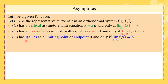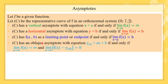C will have a point I with coordinates (a, b) as a limiting point or an end point if and only if the limit of f(x) as x tends to a is b. Finally, C will have an oblique asymptote whose equation is y equals ax plus b if and only if the limit of f(x) as x tends to infinity is infinity and the limit as x tends to infinity of f(x) minus y is zero.